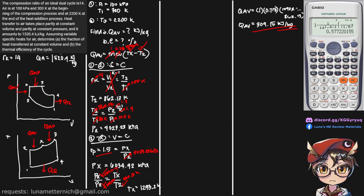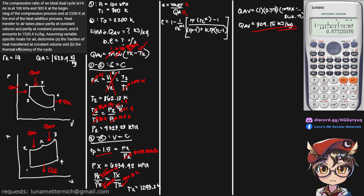Now we need to find question B, the thermal efficiency of the cycle. Thermal efficiency is given by work net over heat added, but we don't have enough information without the heat rejected. So instead we'll use the dual-cycle thermal efficiency equation, and we still need to find the cutoff ratio.